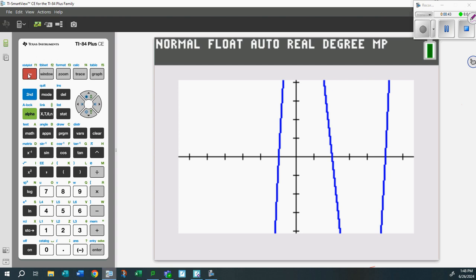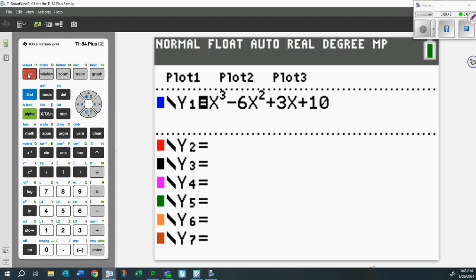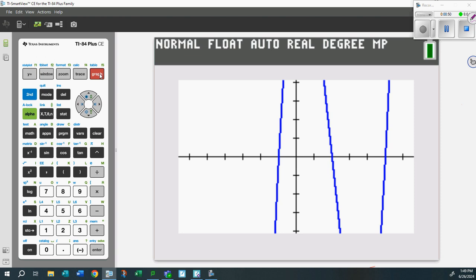I put it in the calculator right here - there it is: x³ - 6x² + 3x + 10. I graphed it to show you this, and you can see the potential zeros are here, here, and here. But what